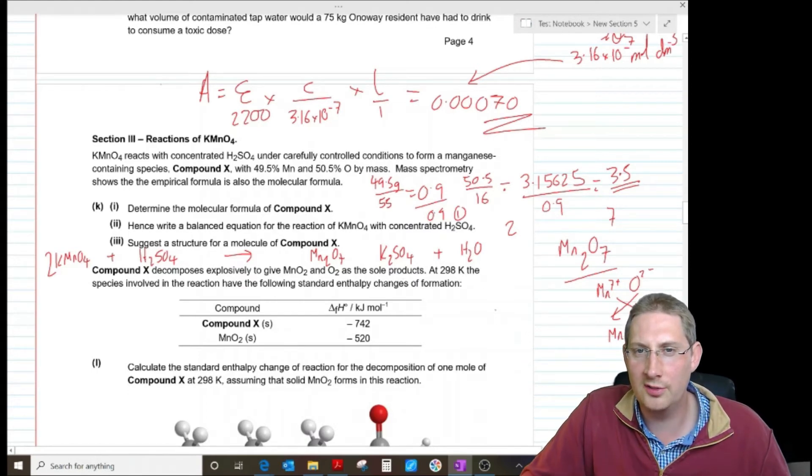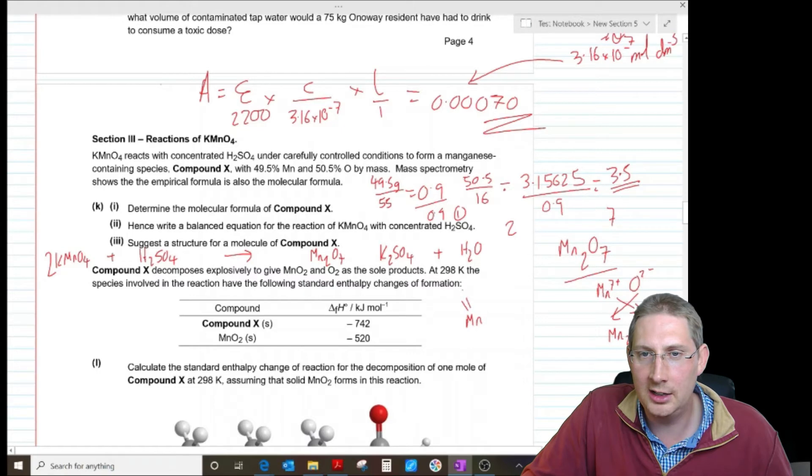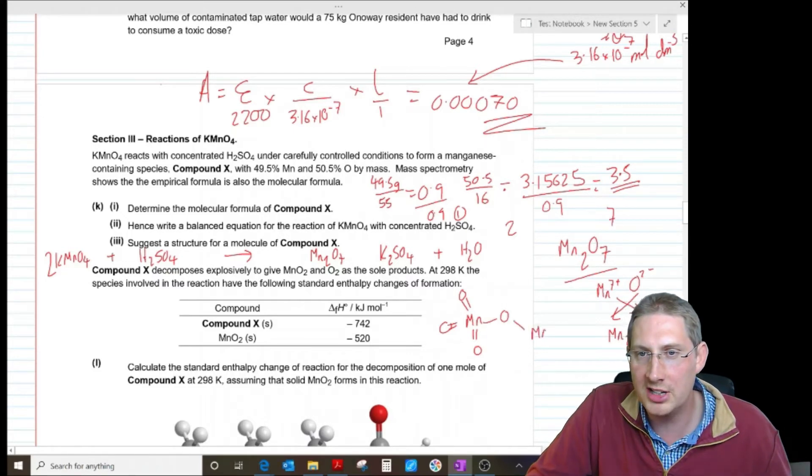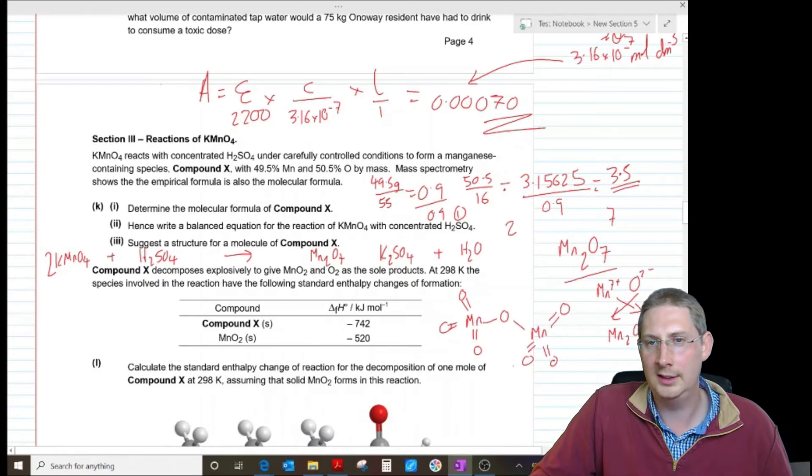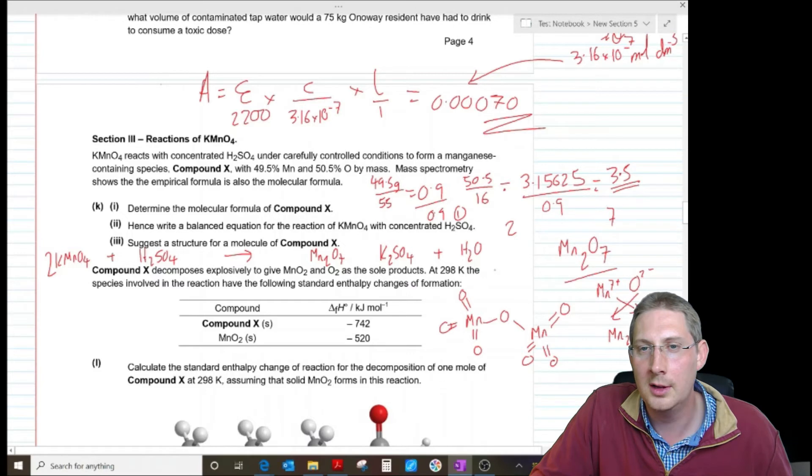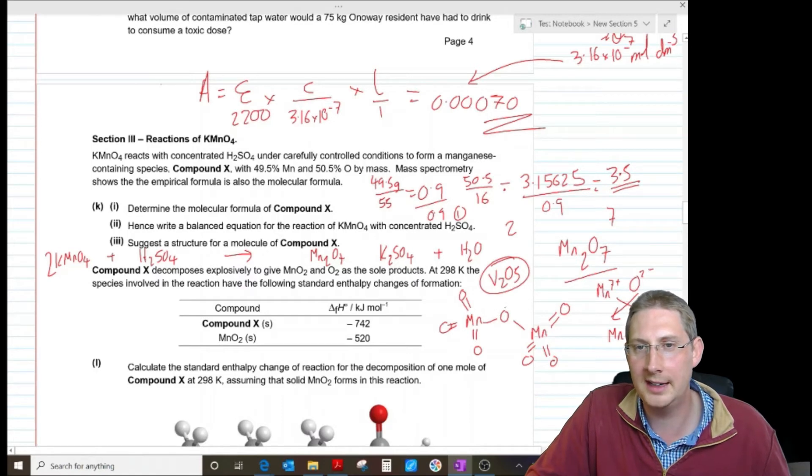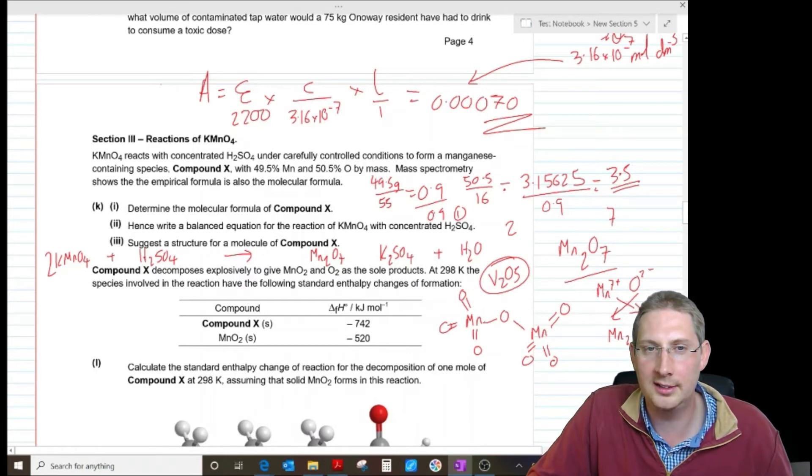Suggest a structure for a molecule of compound X. Well, I think it's going to be very similar to the manganate ion in that we're going to have double bonds to all the oxygens. The only difference is that that oxygen in the middle is going to be a bridging oxygen. Instead of the negative charge, it's going to do that. And that looks fairly straightforward to me. I'm here comparing this to things like V2O5, where I've seen similar structures. But it makes sense instead of the manganate with the minus there, that the two things are linked together.